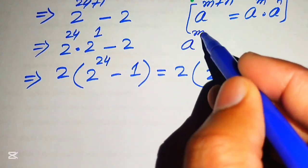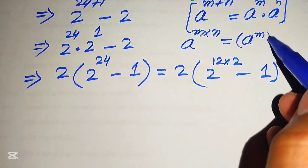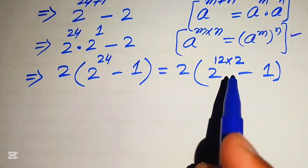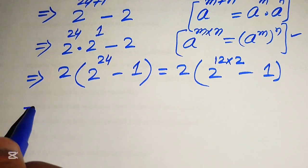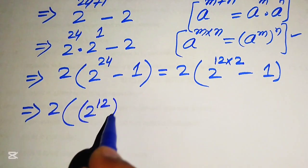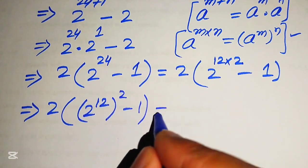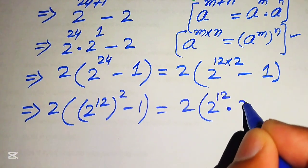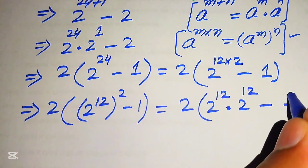Here we apply the exponent law: a to the power of m multiplied by n can be written as (a to the power of m) to the power of n. According to this law, we move the 12 inside and write it as 2 times of (2 to the power of 12) squared, minus 1. This means we are multiplying 2 to the power of 12 by 2 to the power of 12, then subtracting 1.